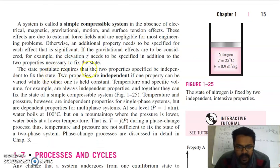The state postulate requires that the two properties specified be independent to fix the state. Two properties are independent if one property can be varied while the other one is held constant. Temperature and specific volume, for example, are always independent properties, and together they can fix the state of a simple compressible system. Temperature and pressure, however, are independent properties for single-phase systems but are dependent properties for multi-phase systems.